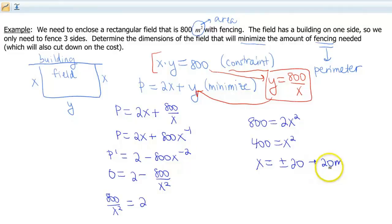Now that we got our x, we need to go back and figure out what our y is. So then we can use our equation that we solved up here for y. So y is gonna be 800 divided by 20. So cancel those zeros, so that gives us 40 meters.